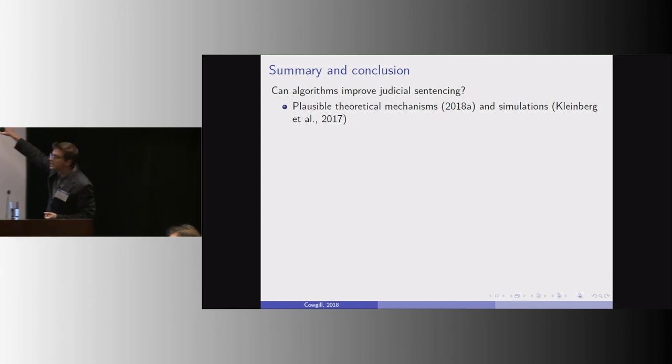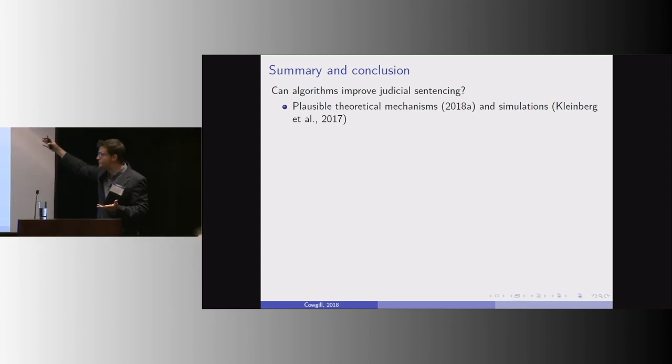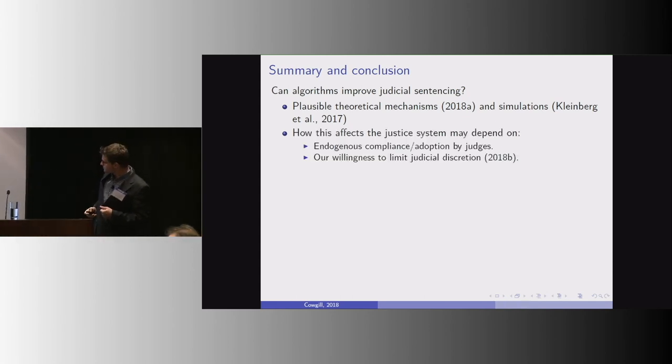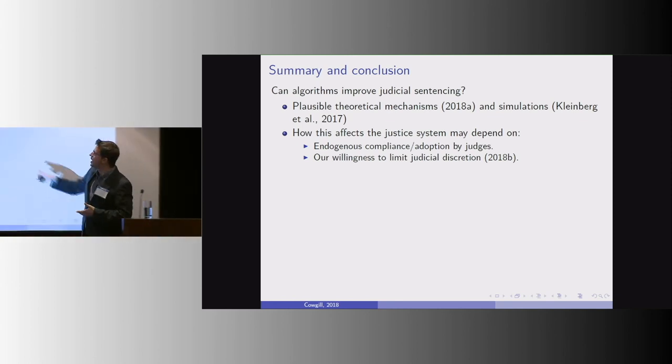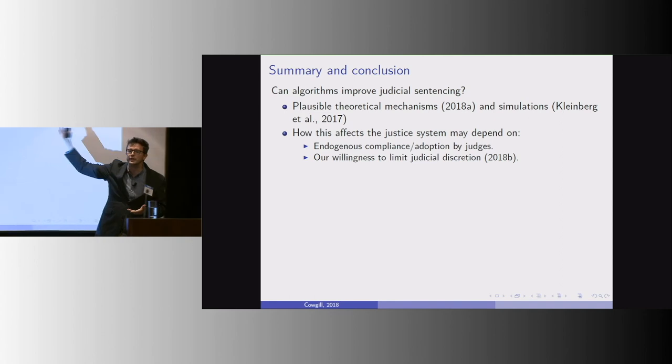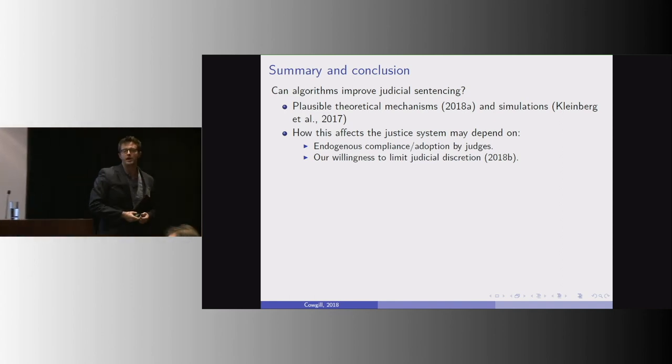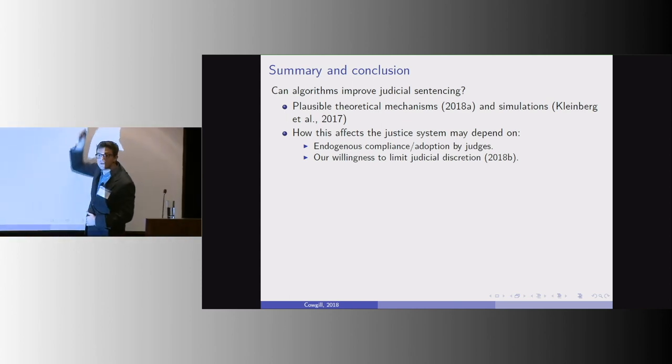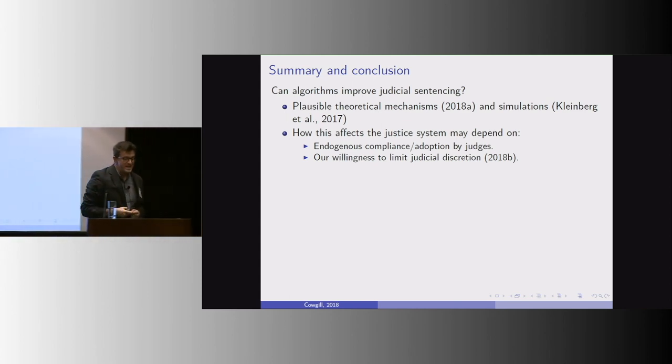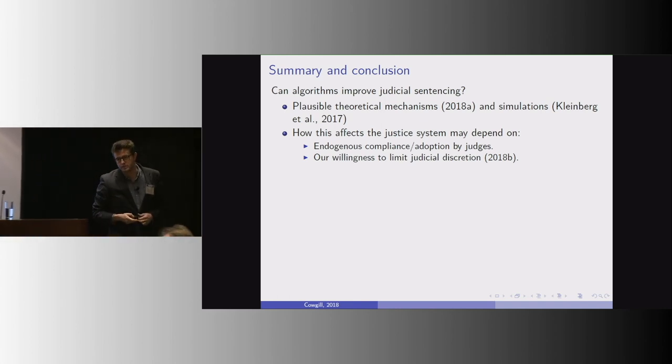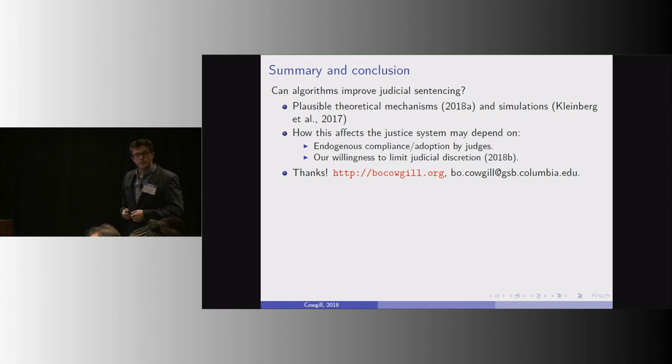We also have this very promising simulation in empirical work by Kleinberg et al., but how this actually works may depend on the level of adoption and also our, as society's, willingness to limit judicial discretion and possibly make them follow or comply with an algorithm like the Kleinberg paper, even and effectively override the judges, limiting their ability to affect that. Thank you very much.